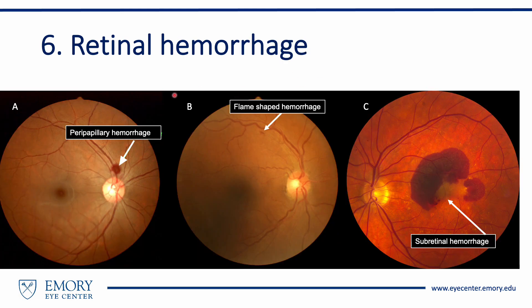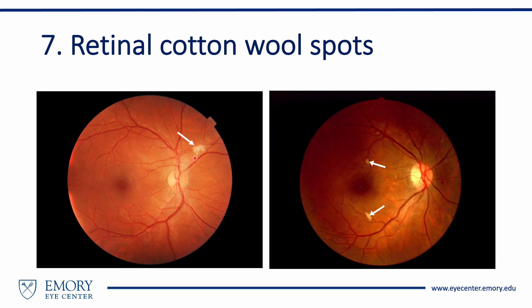Retinal hemorrhage can be seen either in isolation or in combination with other pathology. They can be noted as dot-blot hemorrhages, flame-shaped hemorrhages, or extensive retinal hemorrhages, and can be seen in conditions such as diabetic retinopathy, hypertensive retinopathy, age-related macular degeneration, or severe papilledema. Fluffy white patches on the retina are called retinal cotton wool spots and indicate retinal ischemia; they can be seen in hypertensive and diabetic retinopathy.